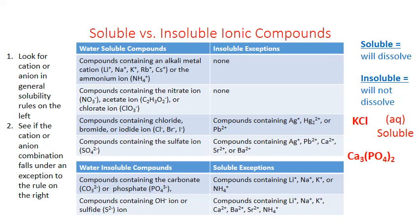For calcium phosphate, we look for either calcium or phosphate in the first column. Phosphate appears under the generally water-insoluble compounds. Looking at exceptions, phosphate is soluble when paired with lithium, sodium, potassium, or ammonium — but nothing about calcium. So calcium phosphate is insoluble and would be labeled (s) in a chemical equation.